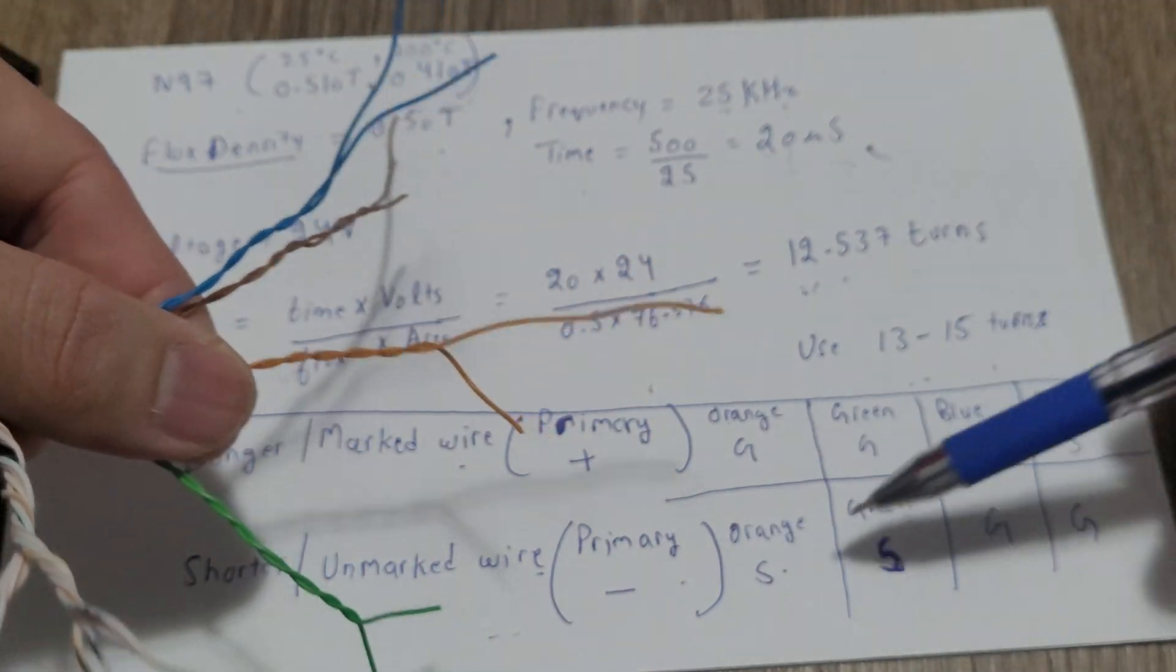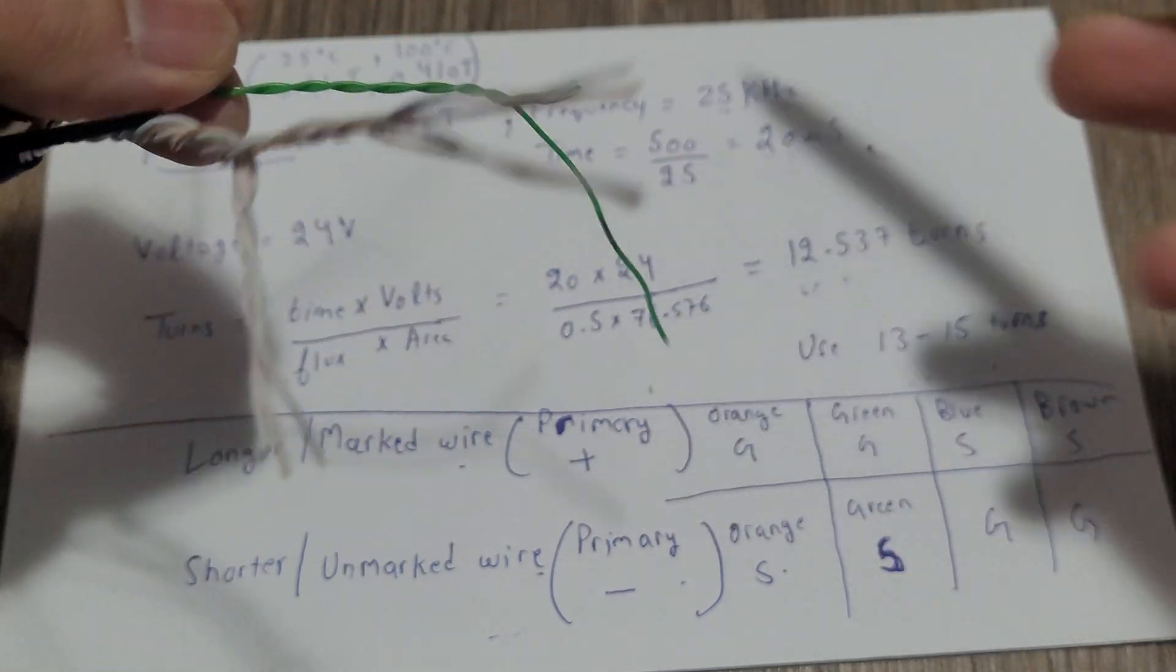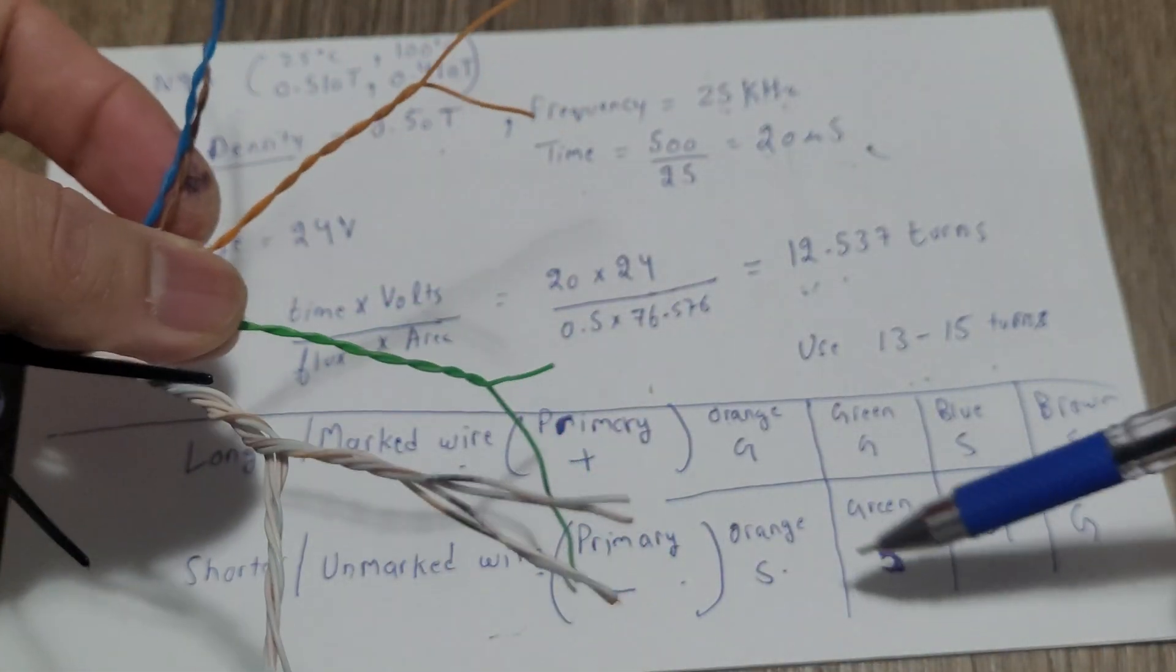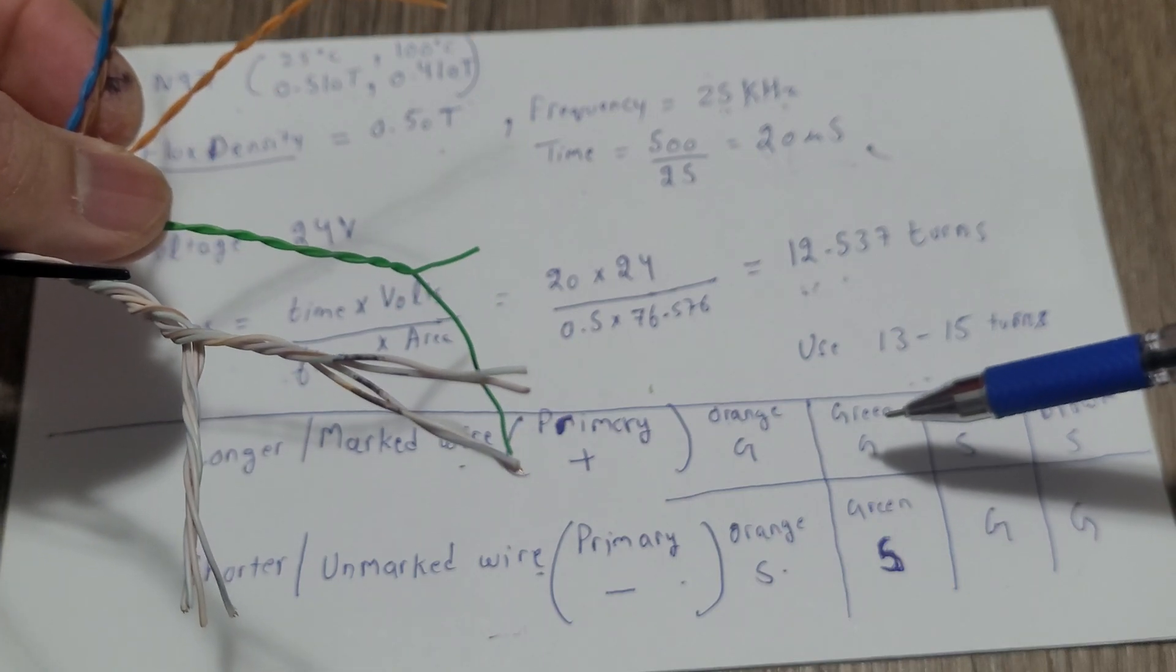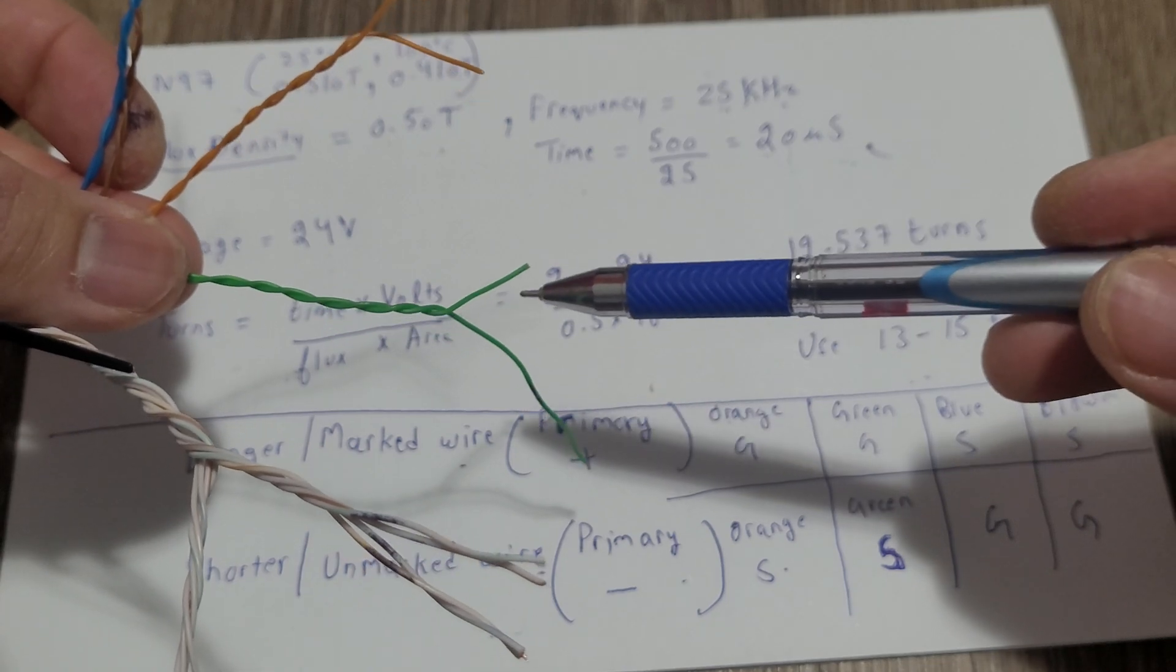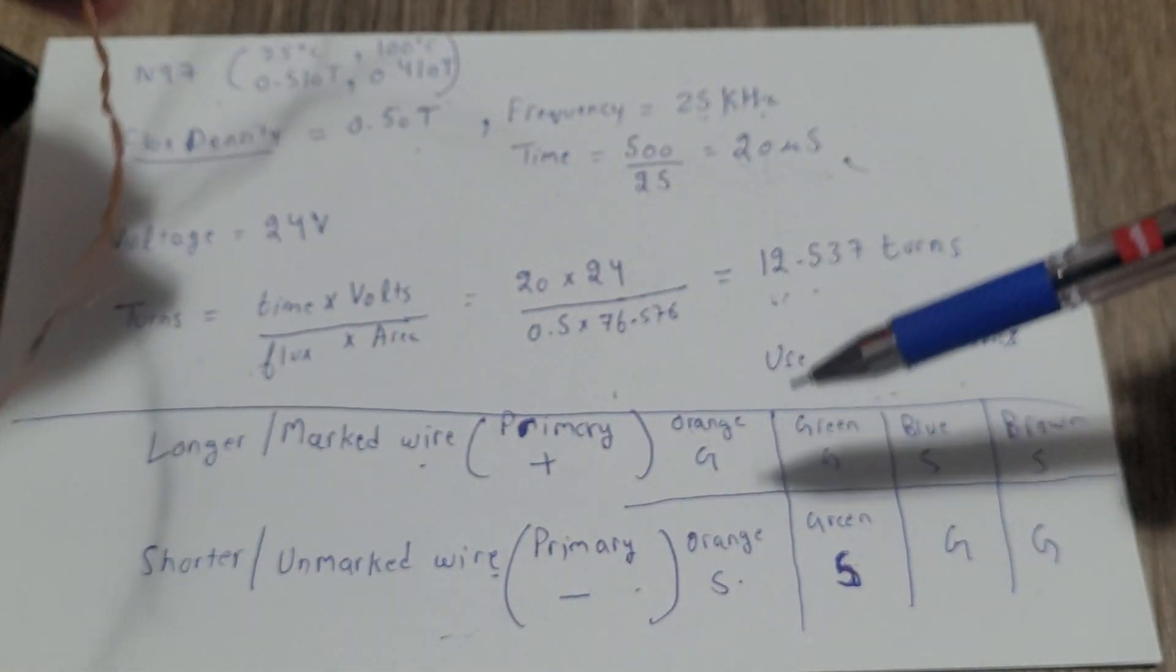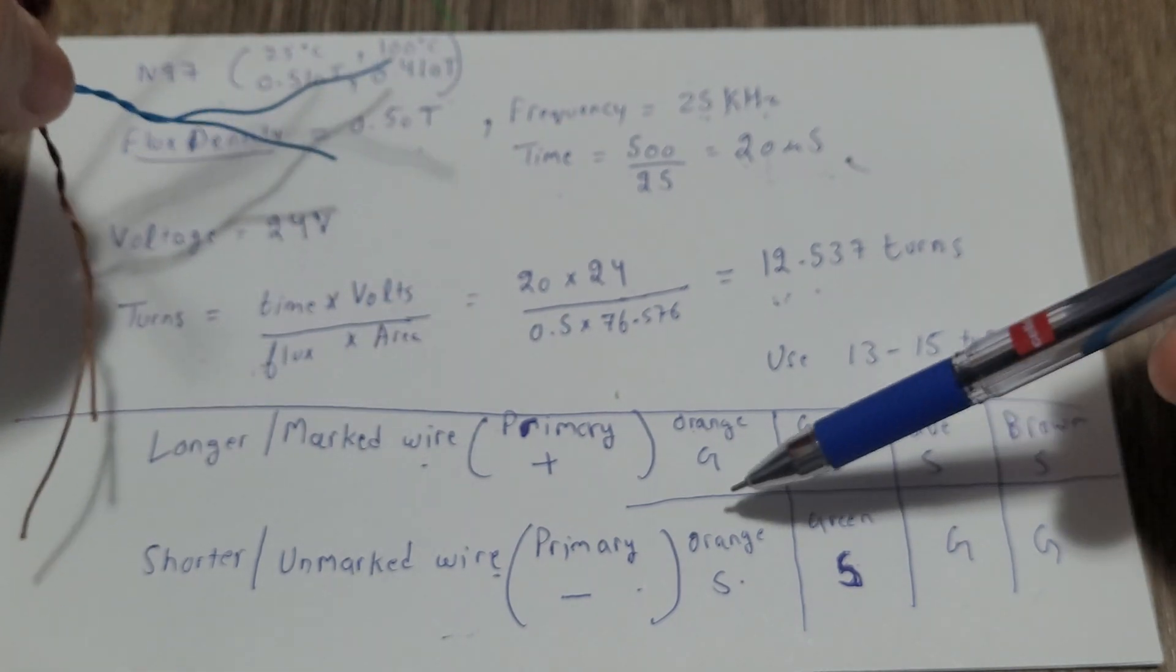And the short one source. And the green one, same exactly same as orange. So gate source, or longer gate, smaller source.